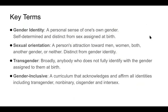Four key terms we're going to use today. One is gender identity: a personal sense of one's own gender, which is self-determined and distinct from sex assigned at birth. We may also touch on sexual orientation, which is distinct from gender identity — it's about attraction towards men, women, both, another gender, or neither.